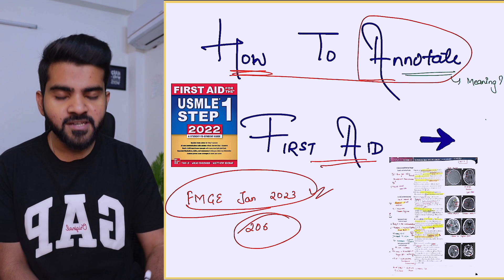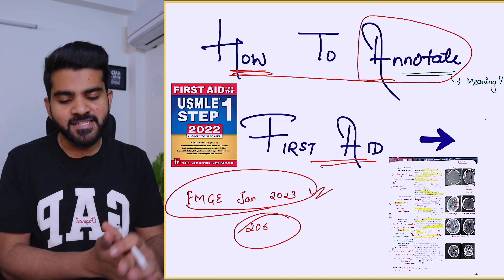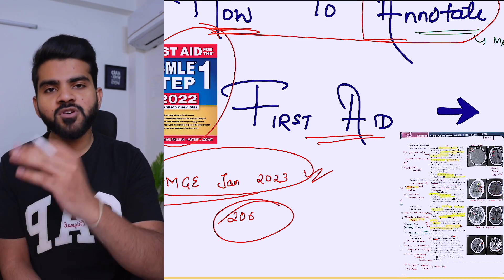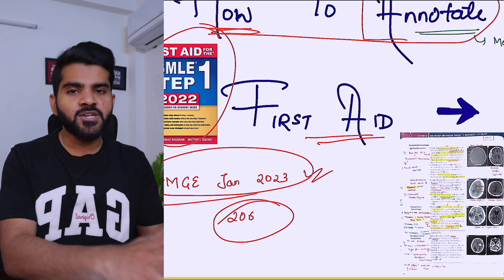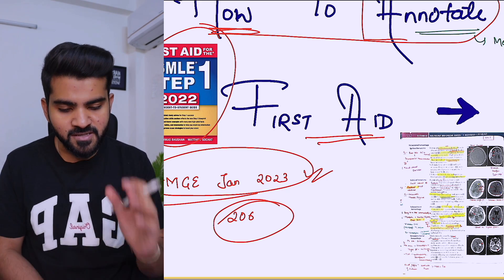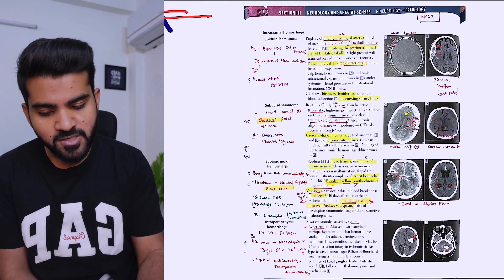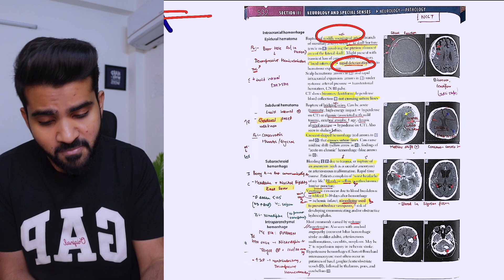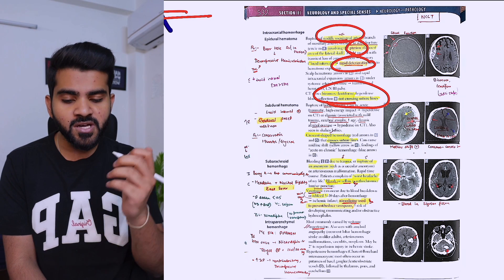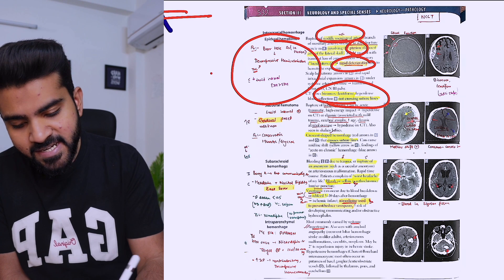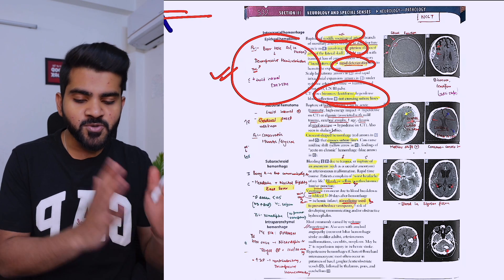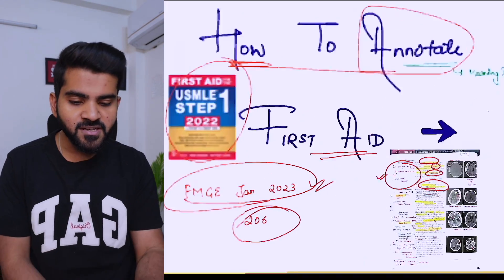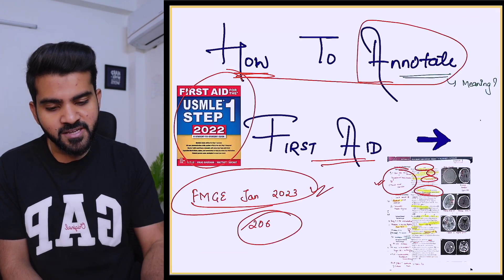So basically, what does annotation mean? Annotation basically means if you buy First Aid, or if someone has bought it for you, it's a new book — nothing is written, nothing is marked, it's a fresh book. When you read it, you will mark what's important, you will mark what you tend to forget, you will mark which topics are asked in PYQs. Writing and adding things like this is basically called annotation, and that is what we have to do in First Aid.